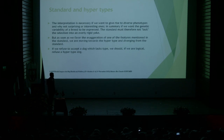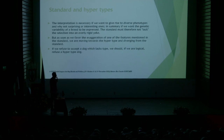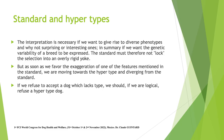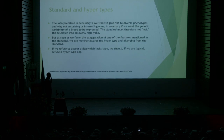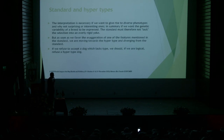Now, high-hypertypes, standard and high-hypertypes. Interpretation is necessary if we want to give rise to diverse phenotypes, and why not surprising or interesting ones? In summary, if we want the genetic variability of a breed to be expressed, the standard must therefore not lock the selection into an overly rigid framework. But as soon as we favor the exaggeration of one of the features mentioned in the standard, we are moving toward the hypertype and diverging from the standard. If we refuse to accept a dog that lacks type, we should, if we are logical, refuse hyper-type dogs too.